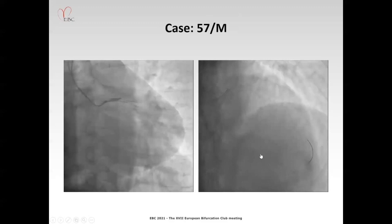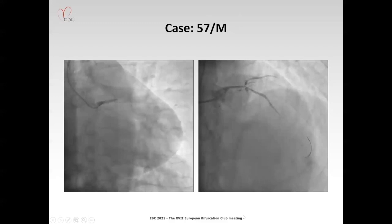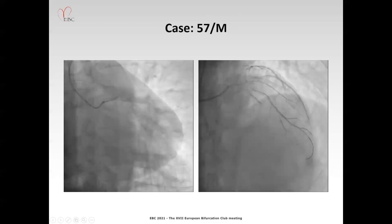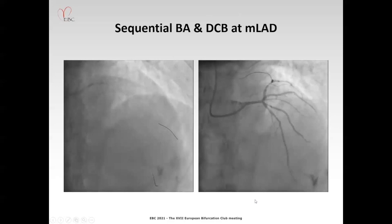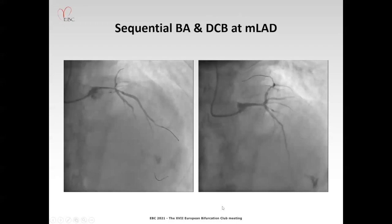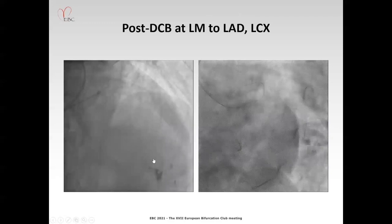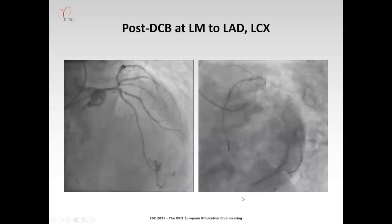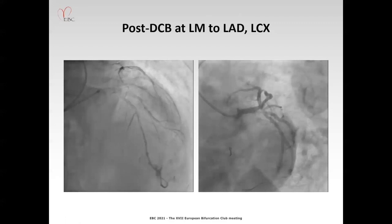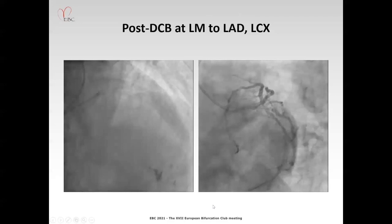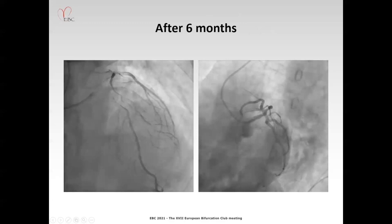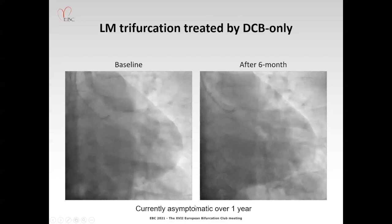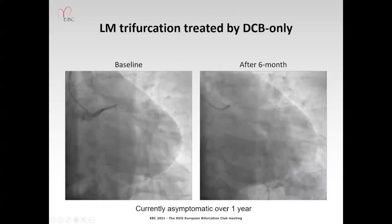This is a 57-year-old man with a left main CTO. After wiring, angioplasty was done with a small 1.5 mm balloon first. After ballooning, flow appeared. I did sequential balloon angioplasty increasing balloon size, and the flow improved a lot. I also performed a scoring balloon for mid-LAD. I did several balloon angioplasties with optimal-sized balloon from left main to LAD and from left main to LCX, followed by drug-coated balloon treatment. After six months, the left main trifurcation region was much dilated and it looks like a normal coronary angiogram. We successfully treated left main CTO trifurcation with drug-coated balloon-only treatment, and the patient is currently doing well for over one year.